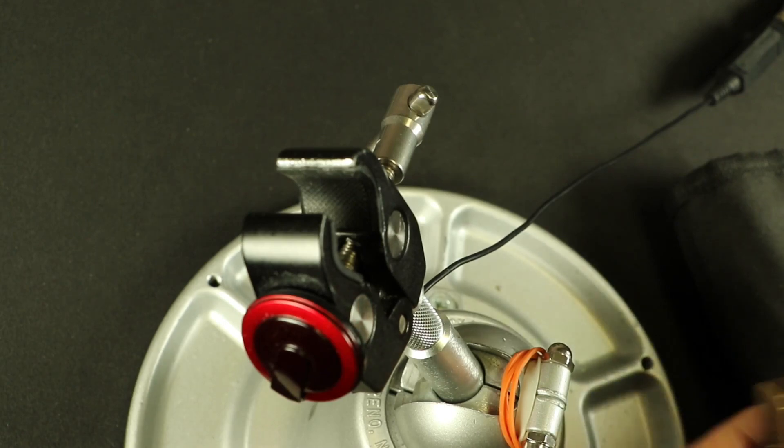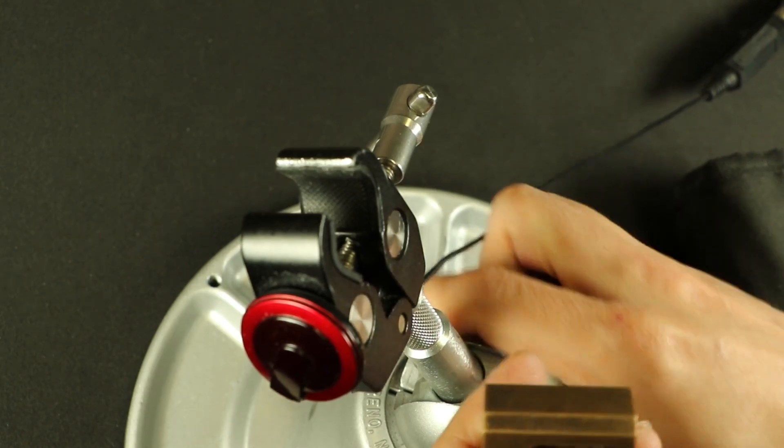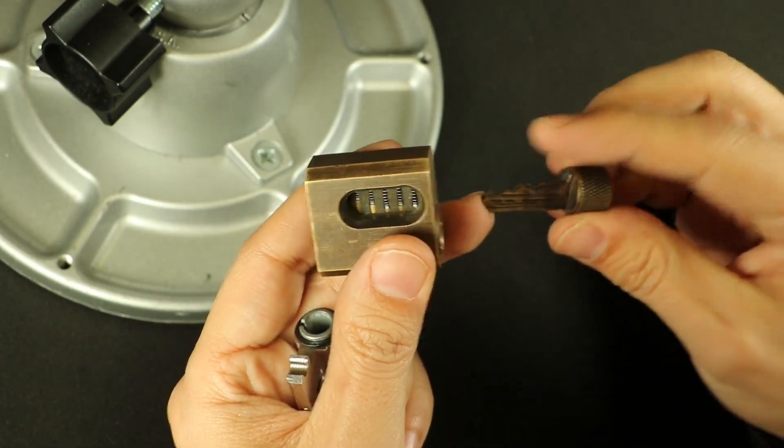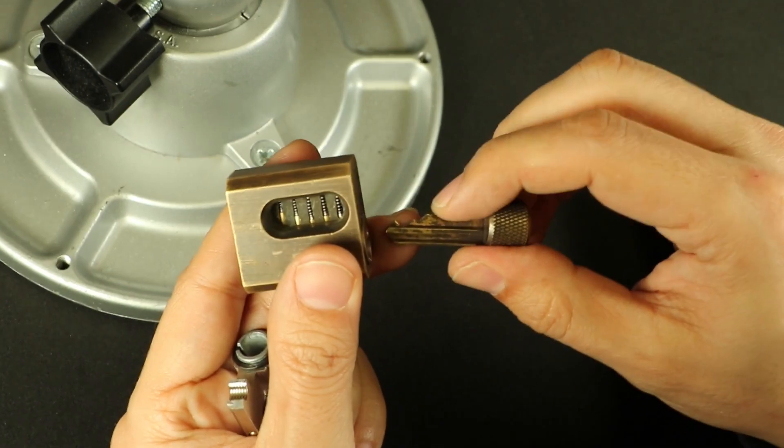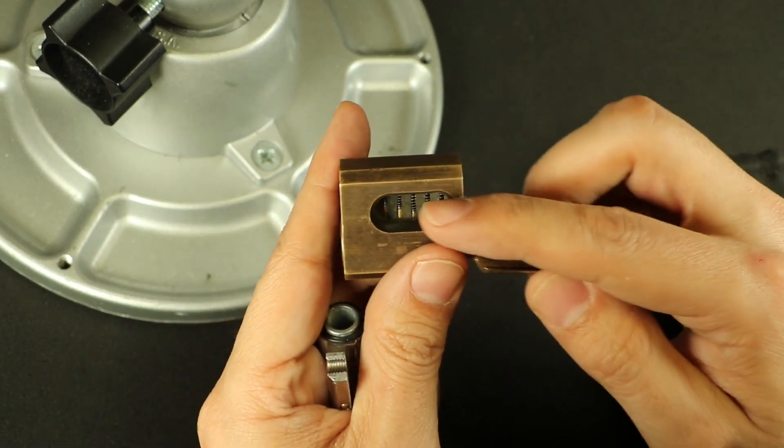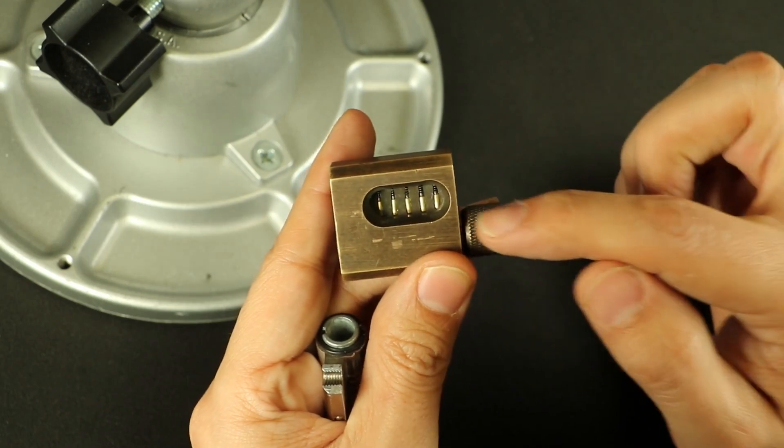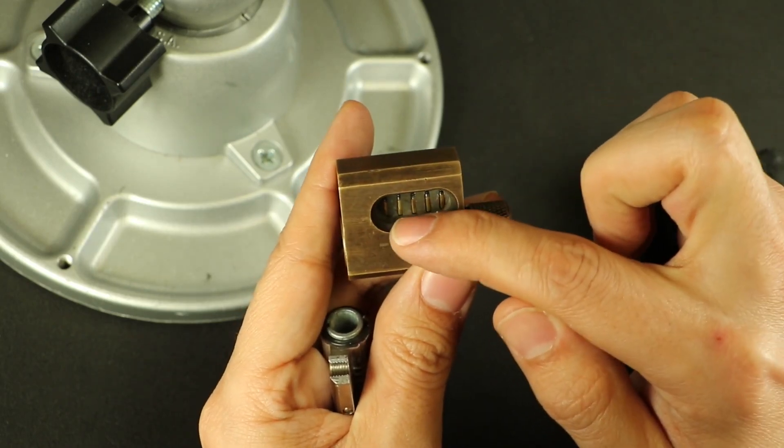The first thing to note is, here's a standard pin tumbler lock. This is your normal pin tumbler lock. You got a key that has a bunch of cuts to it. You can see all the pins are resting at different heights in this cutaway. When you put this in, it lifts them all to the same height so you can see the cut on the bottom is all lined up with what we call the shear line.